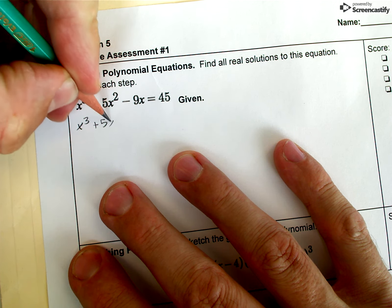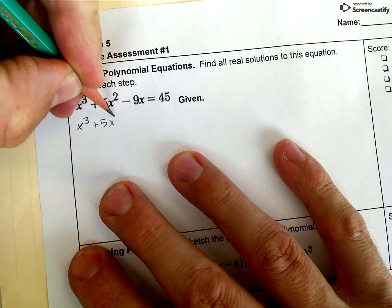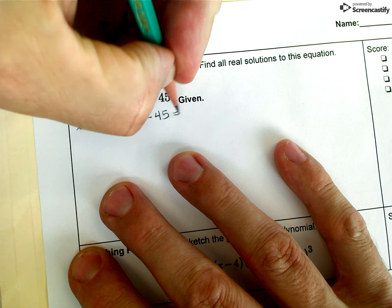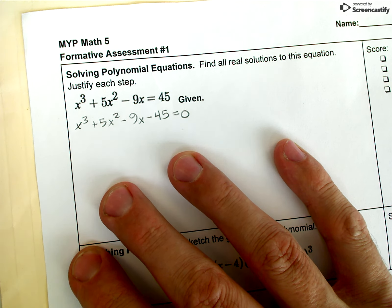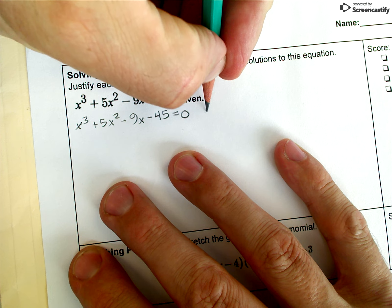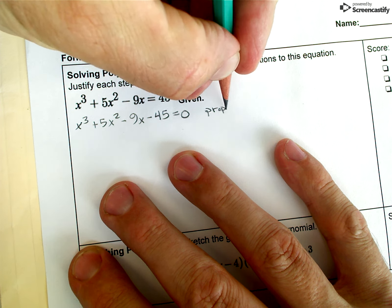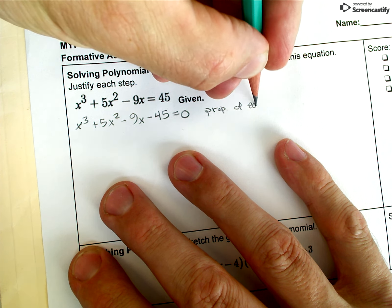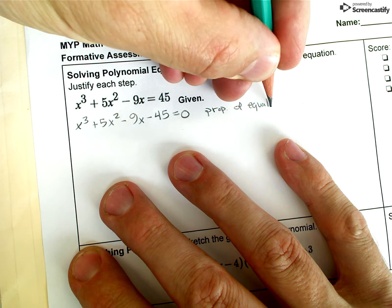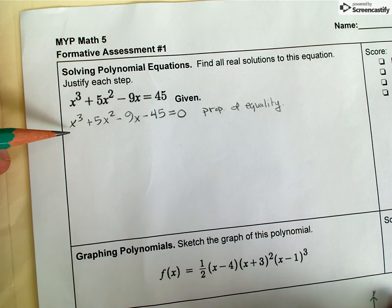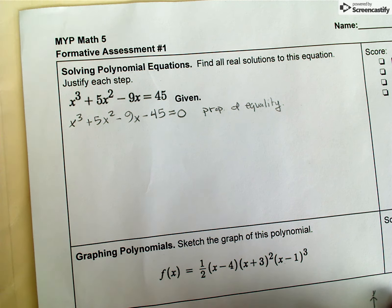If we're going to use the zero product property, then our equation has got to be equal to zero. So the first thing I'm going to do is subtract the 45 from both sides of the equation in order to get it onto the left hand side. The justification for this is the subtractive property of equality, and that's what allows us to do that.